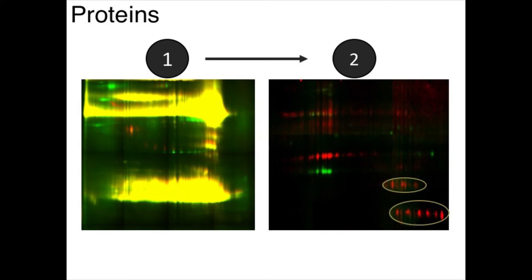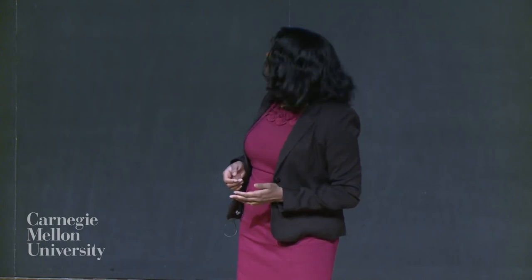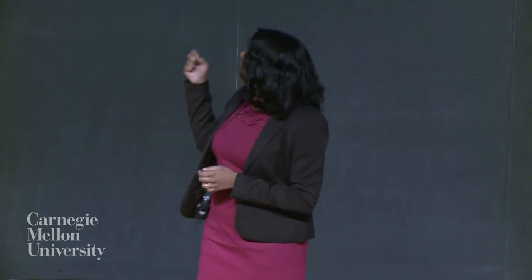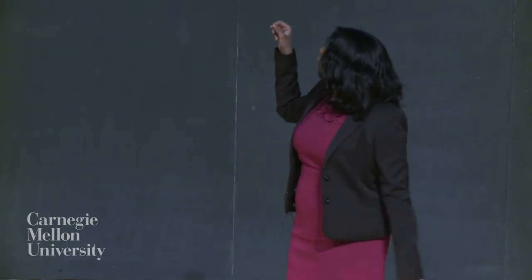What we do here is color code the proteins based on the sample using fluorescent dyes. And just like you would use a magnet to pull out the needles from a haystack, we use the patient's antibodies themselves to pull out the proteins that they are flagging, and then run them on this platform.